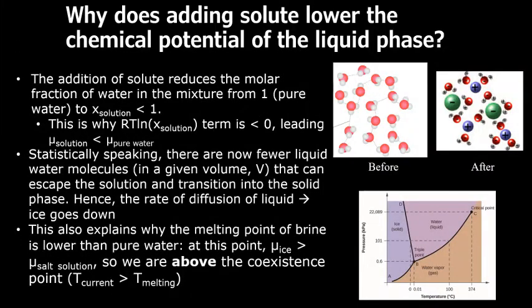Now, why does adding solute lower the chemical potential of the solvent? Well, because once the solute is dissolved, the molar fraction of liquid H2O decreases from one in pure substance to a value less than one, which is why that term gas constant times temperature times the natural logarithm of molar fraction of water is negative, leading to the result mu of water is greater than mu of salt solution.